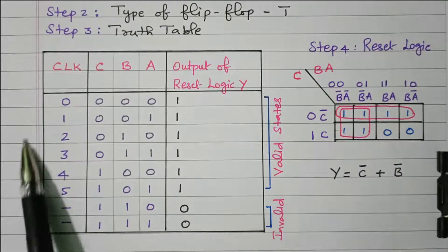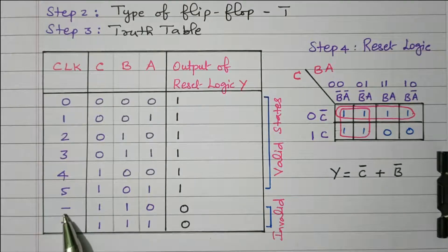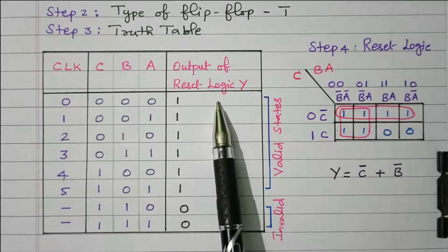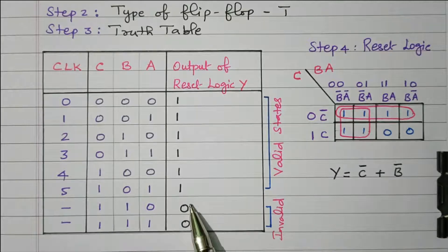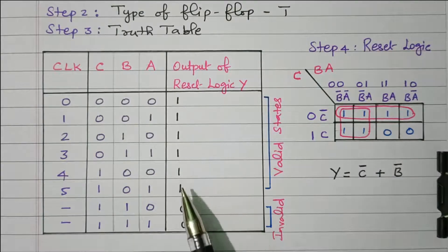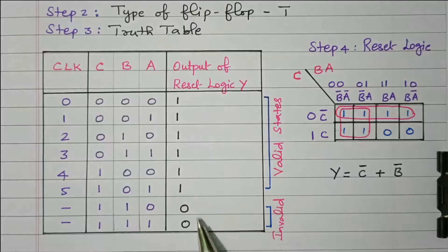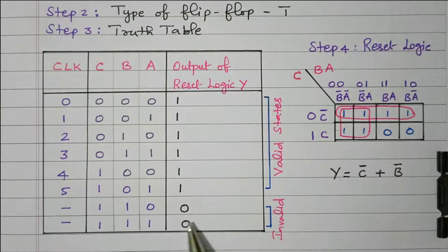The counter goes 0, 1, 2, 3, 4, 5, then again starts from 0. States 7 and 8 are disabled — this is handled by reset logic. After state 5, we reset the flip-flops so it goes back to 0. For states 0 to 5 the reset logic output is 1 (valid); for states 7 and 8 it is 0 (invalid), triggering a reset. This signal is given as the clear signal of all flip-flops so that only states 0 to 5 appear and states 7 and 8 are suppressed.